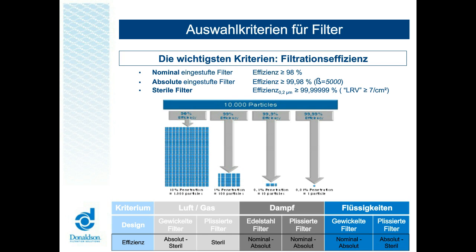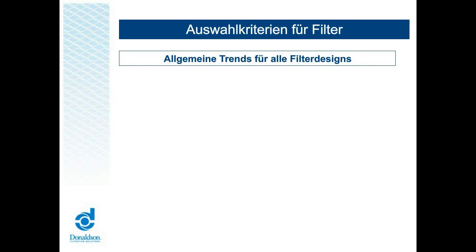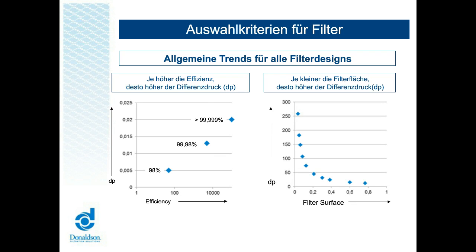Die nächste Frage ist dann logisch: Wie verhalten sich Filtrationseffizienz und Druckverlust zueinander? Je nach Typ, Aufbau und Medien unterscheiden sich die Werte signifikant. Als Grundregel gilt: Je höher die Effizienz, desto höher auch der Druckverlust. Je niedriger die Filtrationsoberfläche, desto höher der Druckverlust. Um diesen inhärenten Nachteil hocheffizienter Filter auszugleichen, sollte die Filtrationsoberfläche vergrößert werden, wobei ein plissierter Aufbau dieser Übung sehr zweckdienlich ist.